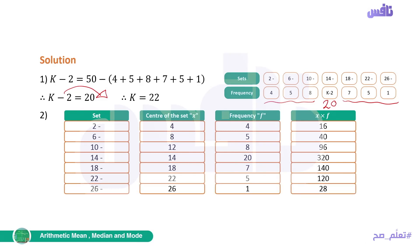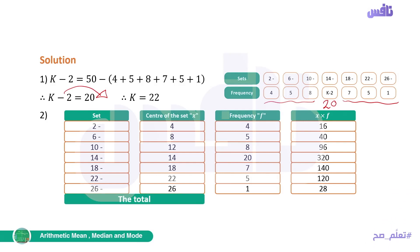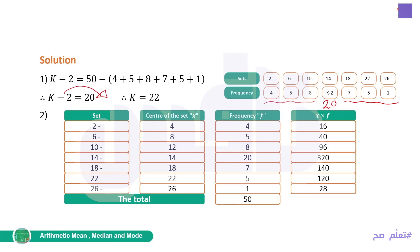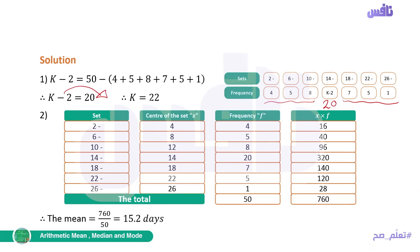After completing the table, we find the totals: total of f = 50, and total of x×f — by adding all those numbers — = 760. Then we find the mean: mean = Σ(x×f) / Σf = 760 / 50 = 15.2 days.